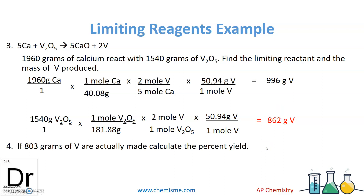The amount of V we're going to make is 862 grams. If in the lab we actually made 803 grams, our percent yield is 803 divided by 862, times 100 equals 93%. That's pretty good.